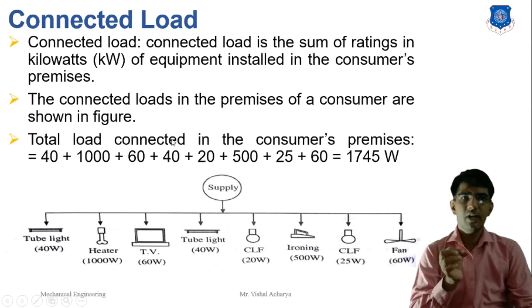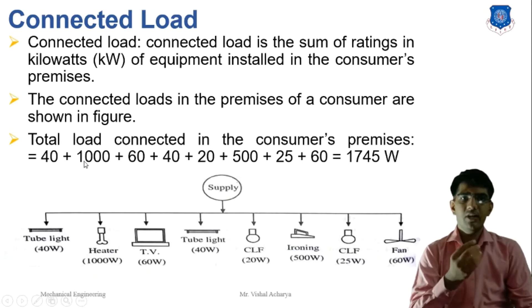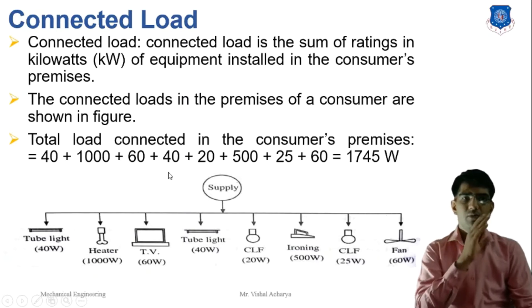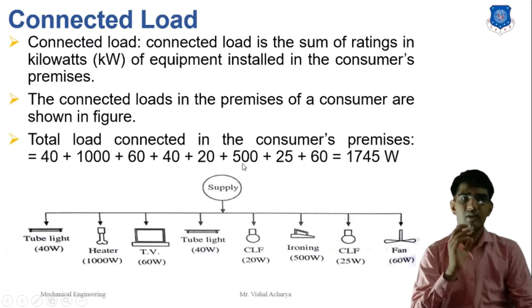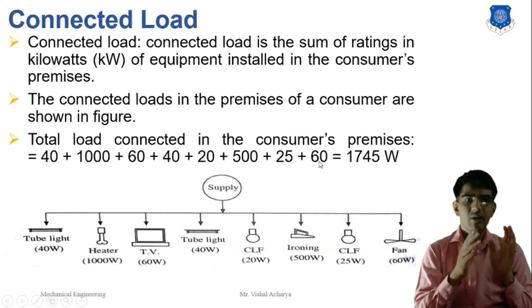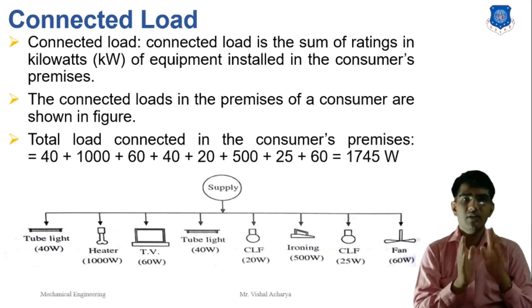The total connected load is: tube light 40 + heater 1000 + TV 60 + tube light 40 + CFL bulb 20 watt + iron 500 watt + CFL 25 watt + fan 60 watt. The total connected load for this system is 1745 watt.